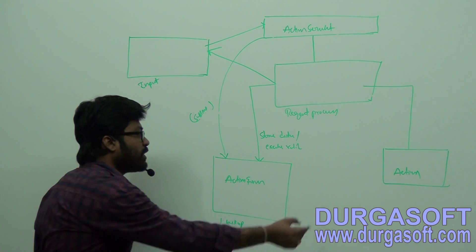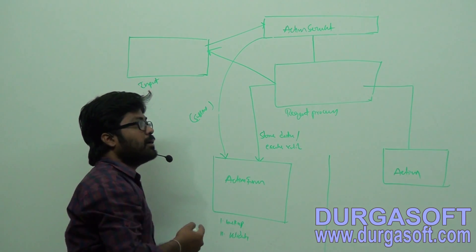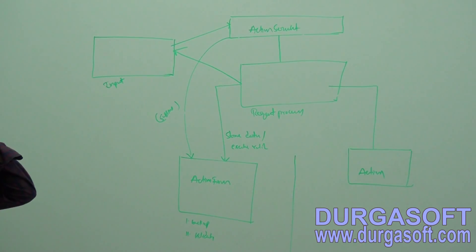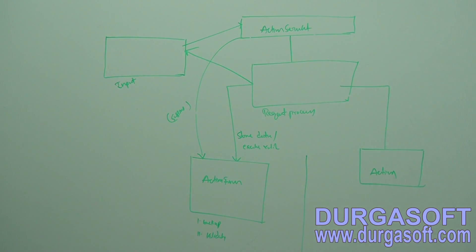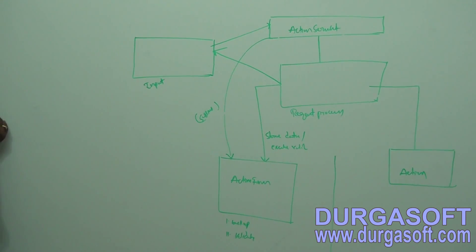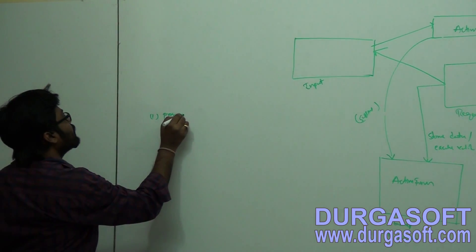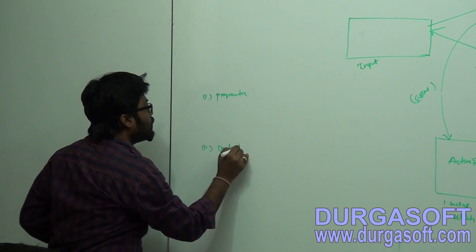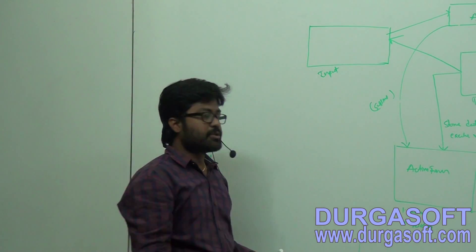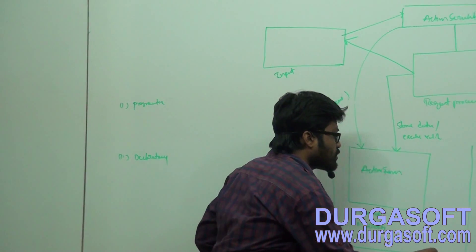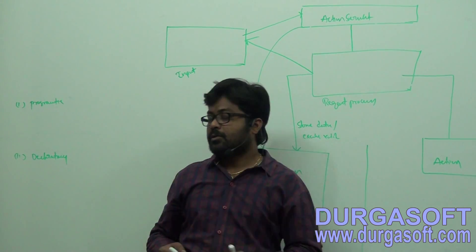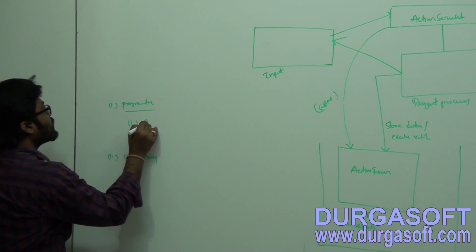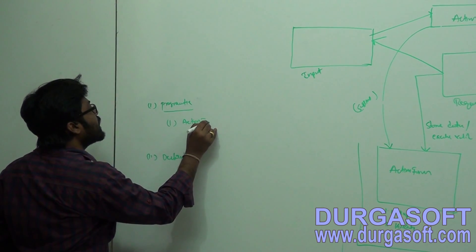So the left-hand side part is for applying validations, and the right-hand side part is for executing controller operations. For applying validations, how many approaches do we have? There are two ways — programmatic and declarative — to apply validations and to provide form backup support, by using ActionForm or DynaActionForm.